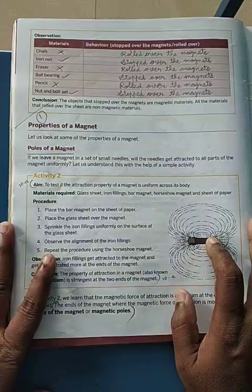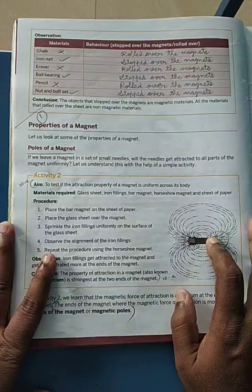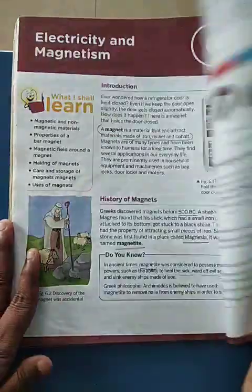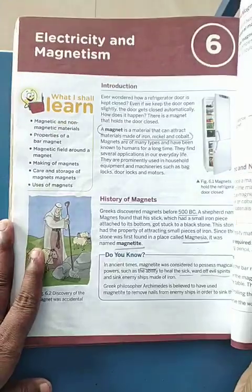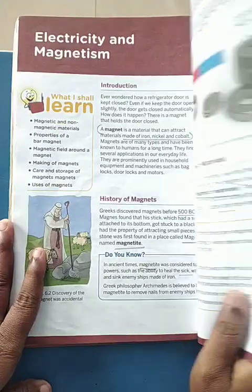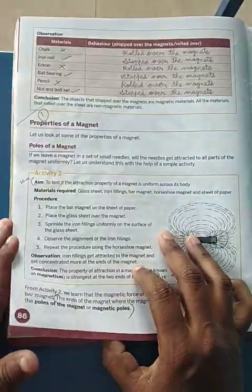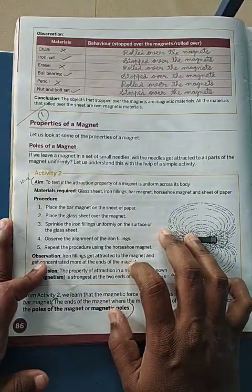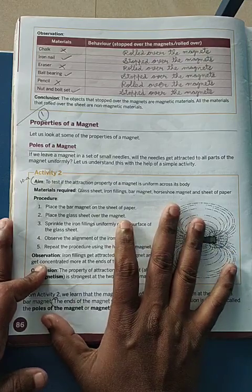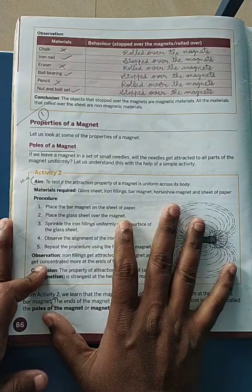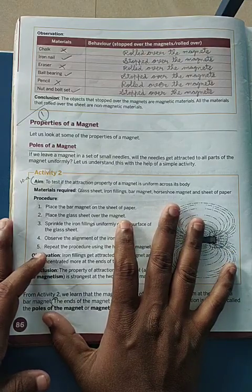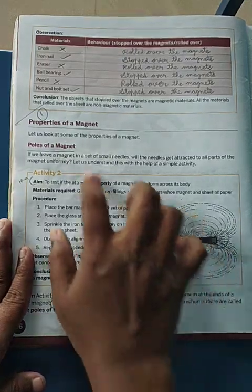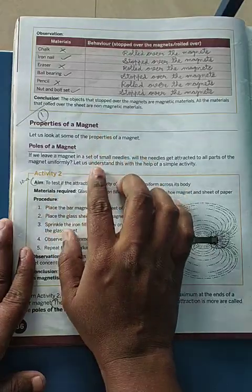Good morning children. Today we will be continuing with our lesson on magnets, electricity and magnetism. In the earlier video we saw about the discovery of the magnet and then we started with the properties of the magnet.